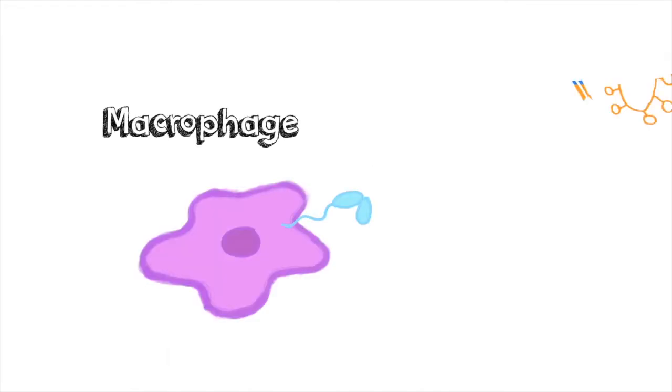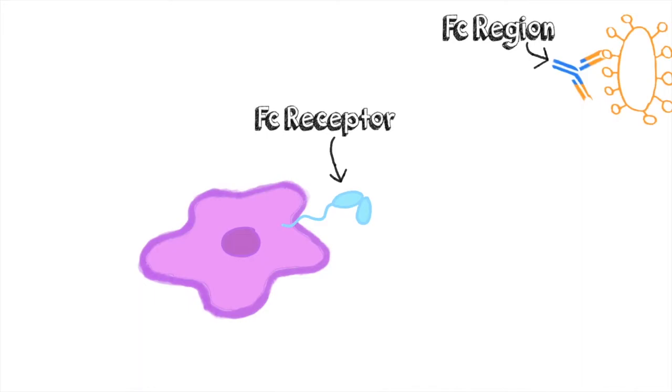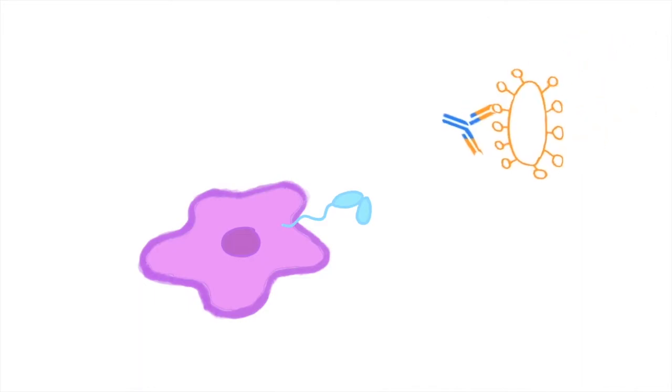Macrophages, which have receptors for the Fc portion of an antibody, will bind the antibody, engulf the whole target, and digest it with internal chemicals and enzymes.